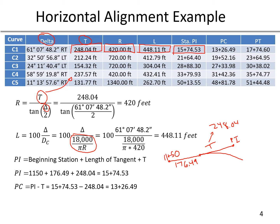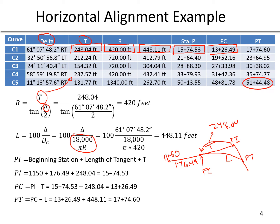We passed the PC when calculating the PI, so all we have to do now is move back from the PI the distance T of 248.04. The PC is the PI minus T: 15 plus 74.53 minus 248.04 gives us a PC station of 13 plus 26.49. Moving along the curve, we travel the length L to find the PT. PT equals PC plus L: 13 plus 26.49 plus 448.11 gives us a PT station of 17 plus 74.60.